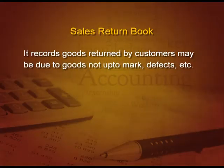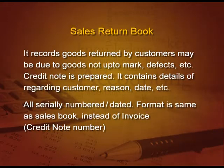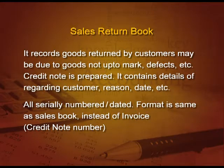Let us discuss the next book: sales return book. Sales return book records goods returned by customers, maybe due to goods not up to the mark or some defect. A credit note is prepared for this sale return. In this credit note, there will be details regarding the customer, the reason of return, the date, and other things. All these debit notes and credit notes are serially numbered and dated. The format is again the same as the sales book, but instead of invoice number, we will have a credit note number.